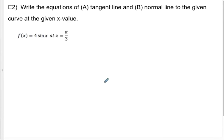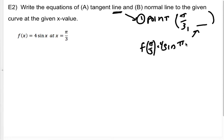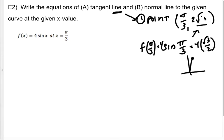Now we're going to do our classic tangent and normal line problem. We see that it's a line, so the first thing I know is I need two things: a point, which I can find using not calculus. So my point is going to be pi over 3 comma blank. f of pi over 3 is going to be 4 times the sine of pi over 3. Pi over 3 is right here on the unit circle, so that's 4 times root 3 over 2, giving me 2 root 3.